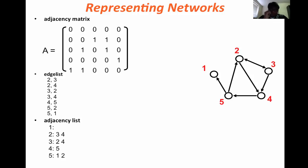You can represent networks in three different formats: using an adjacency matrix, which is represented as either binary or as a weighted network, or in edge list format, or in adjacency list. In this directed network representation, node one has no outgoing links so it's zero, node two has two outgoing links which connect to nodes three and four.